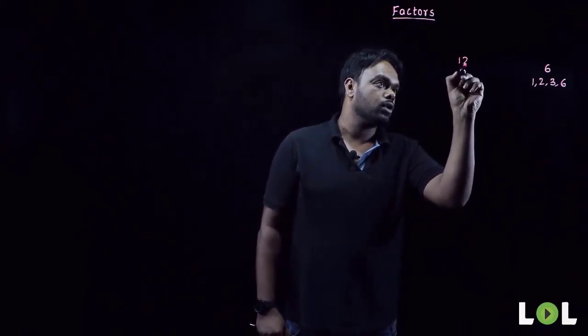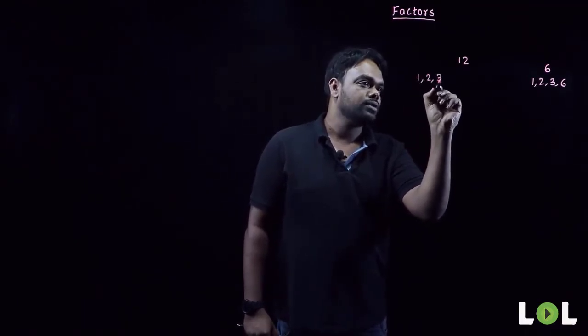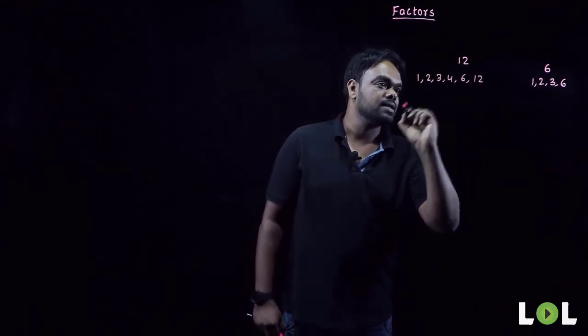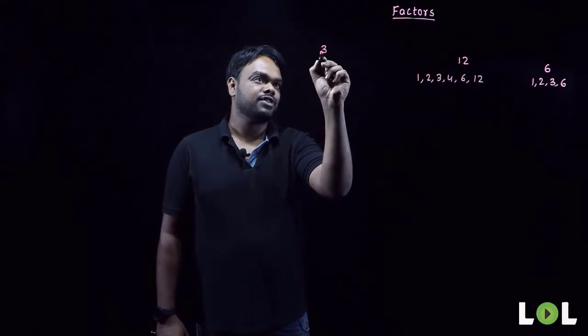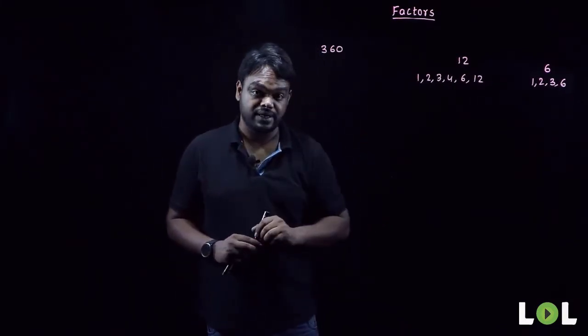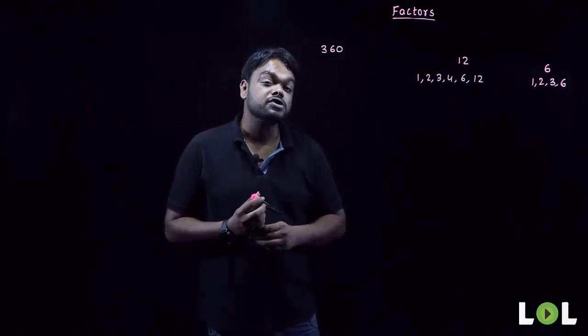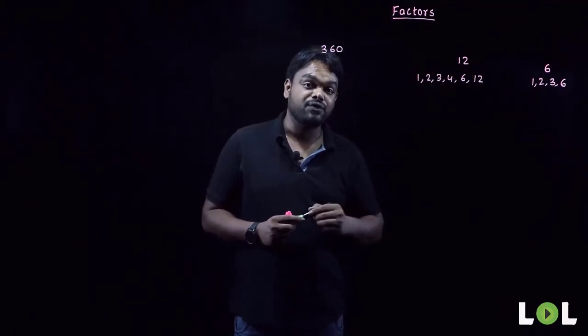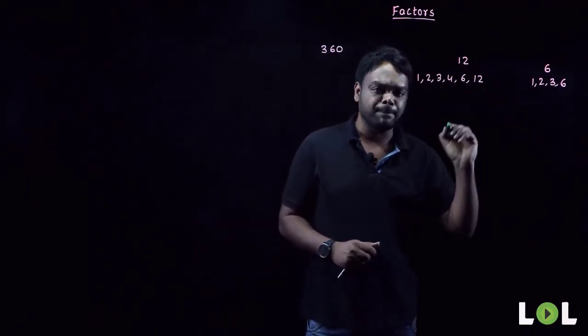Now that we understand factorization, let's see how to calculate the number of factors of any given number using factorization. For 6, the factors are 1, 2, 3, 6 — four factors. For 12, the factors are 1, 2, 3, 4, 6, 12 — six factors. For a larger number like 360, listing all factors manually would take too long, so we use factorization.